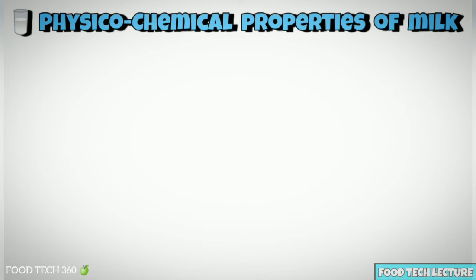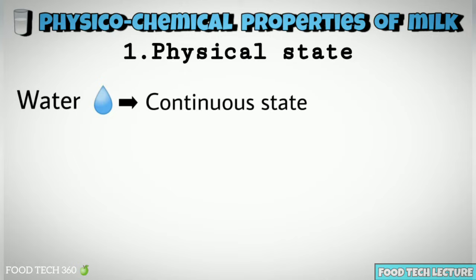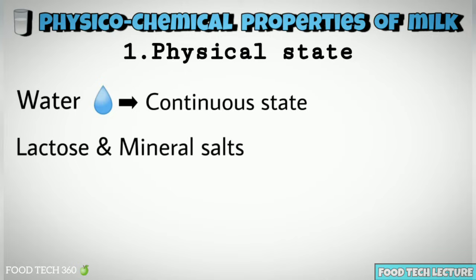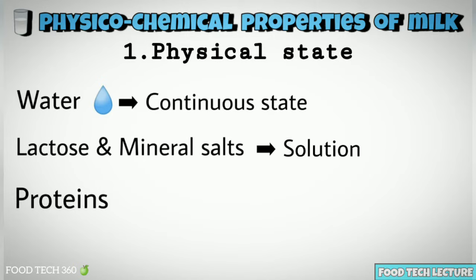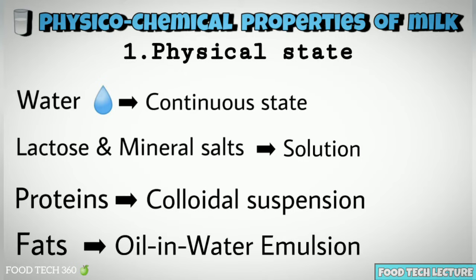Physicochemical properties of milk. Physical state: water present in milk is in a continuous state in which other constituents are dissolved or suspended. Lactose and a portion of mineral salts are found in solution. Proteins and remaining minerals are in colloidal suspension. Fats exist as an oil-in-water type of emulsion.